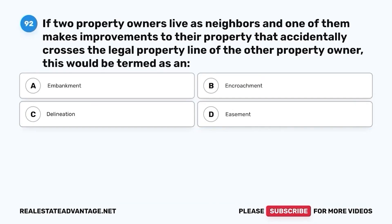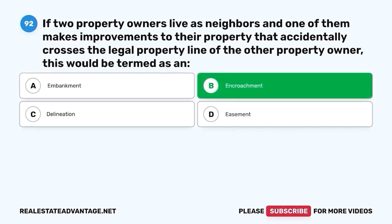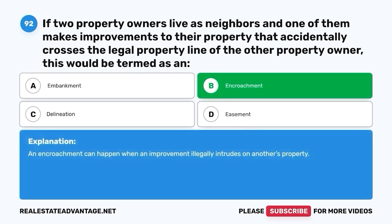Question 92. If two property owners live as neighbors and one of them makes improvements to their property that accidentally crosses the legal property line of the other property owner, this would be termed as an: A. Embankment. B. Encroachment. C. Delineation. D. Easement. The correct answer is B. Encroachment. An encroachment can happen when an improvement illegally intrudes on another's property.